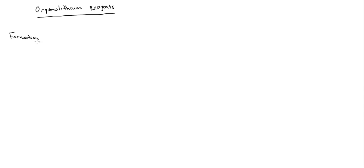So organolithium reagents. We'll start this off by talking about the formation, or how we get an organolithium. Similar to the last video where we started off with some alkyl halide, in this case we also start off with some alkyl halide — so chlorine, bromine, iodine, something like that. And in order to get an organolithium, what we do is we add two equivalents of lithium.